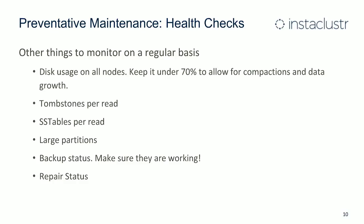Now, some preventative maintenance — prevention is better than cure. This is really the approach we take here at Instacluster: keep an eye on things and try to correct them before they become a major problem. One key thing is disk usage — try to keep that under 70% on all nodes to allow enough headroom for compactions and natural data growth. Trying to recover a node from a full disk is rather painful and usually can't be done without some sort of downtime and potentially data loss. Things like tombstones per read, SS tables per read, and large partitions in your tables — if these are trending up, that's an indication it's going to impact read performance, and you need to investigate and take action.